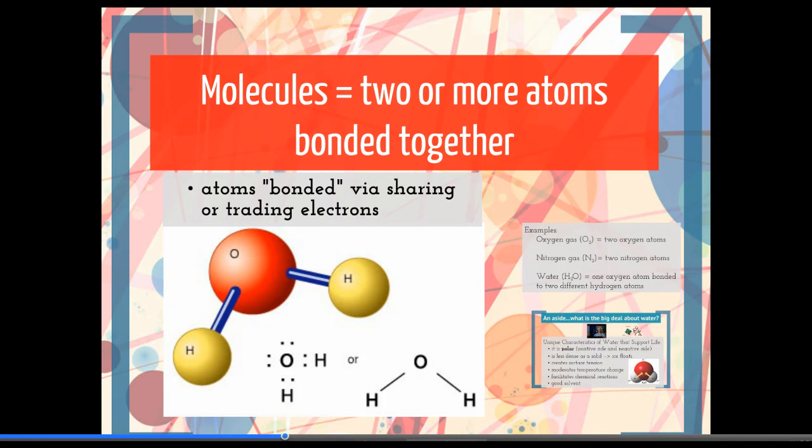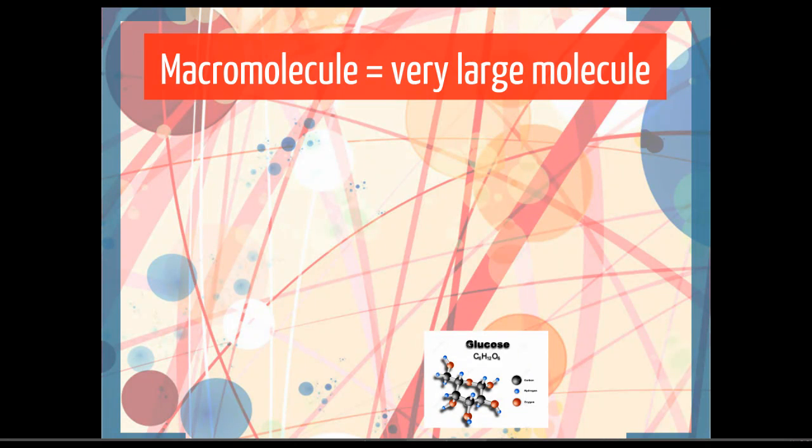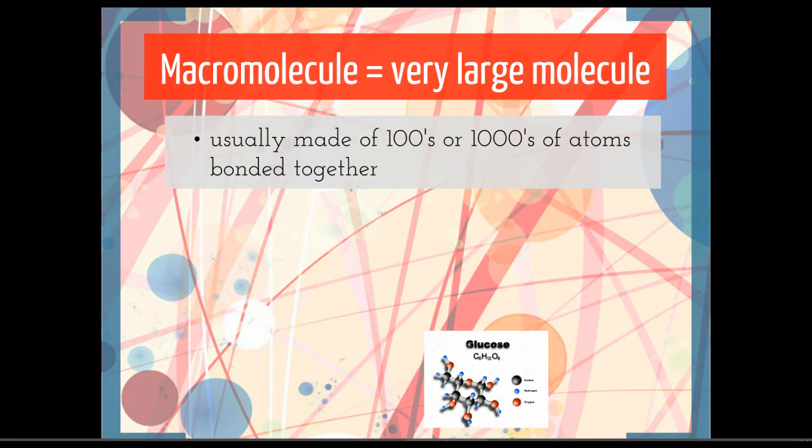So molecules are two atoms bonded together and a macromolecule is just a very large molecule. It's going to be made of hundreds or thousands of atoms bonded together rather than just one or two atoms bonded together.